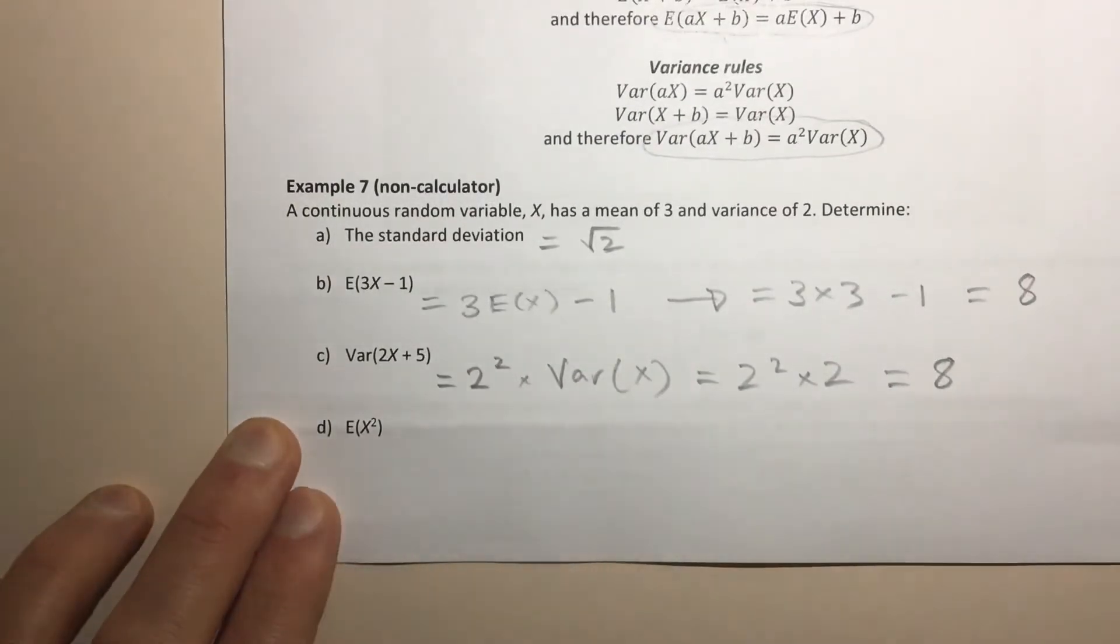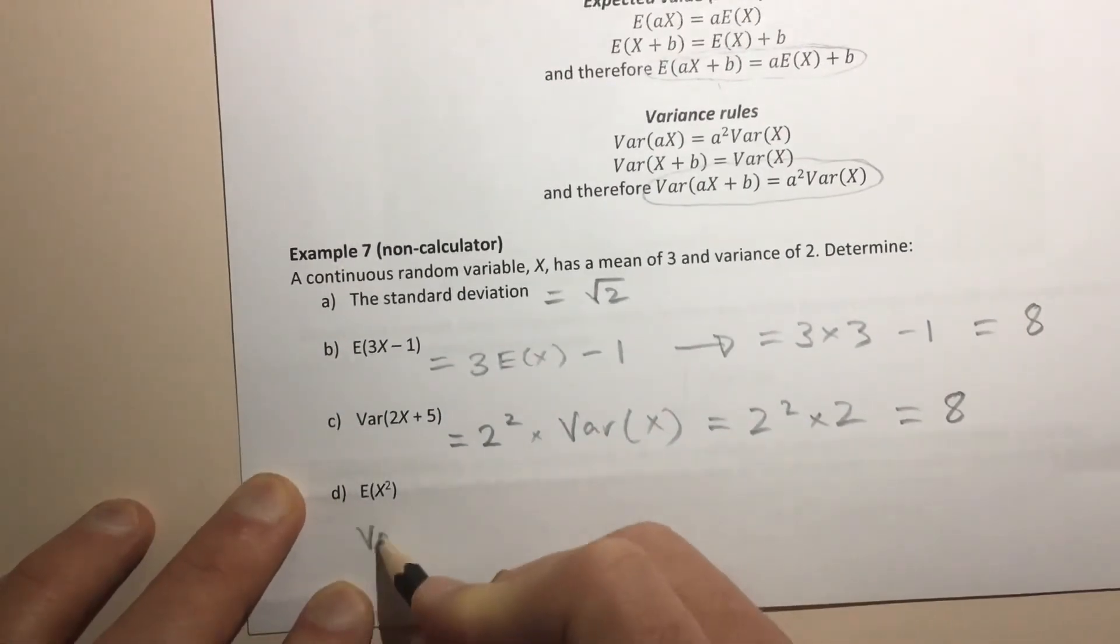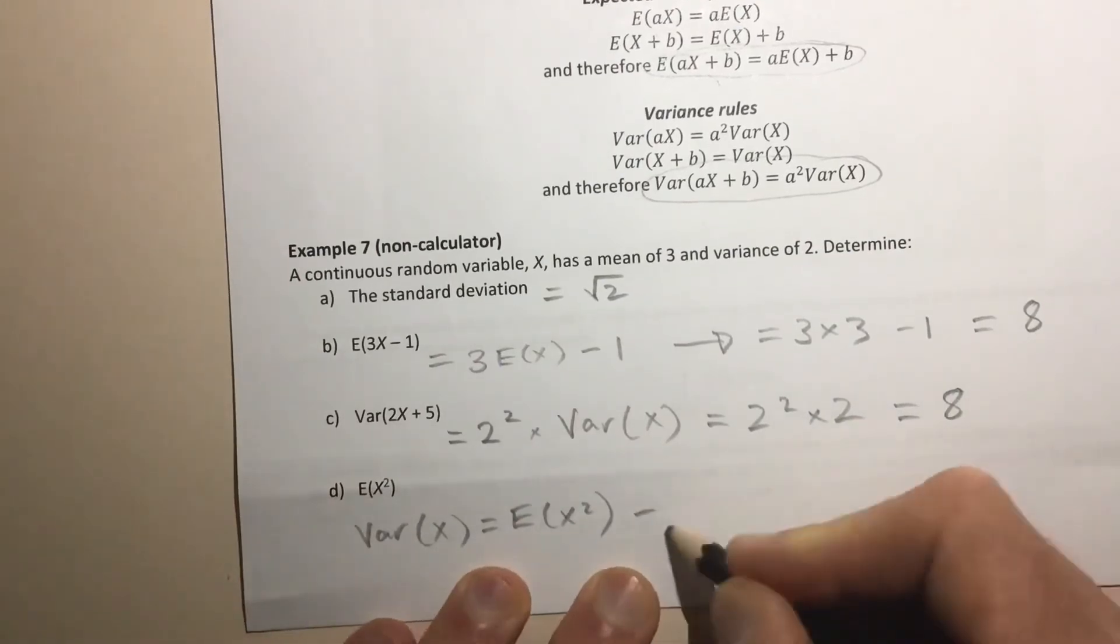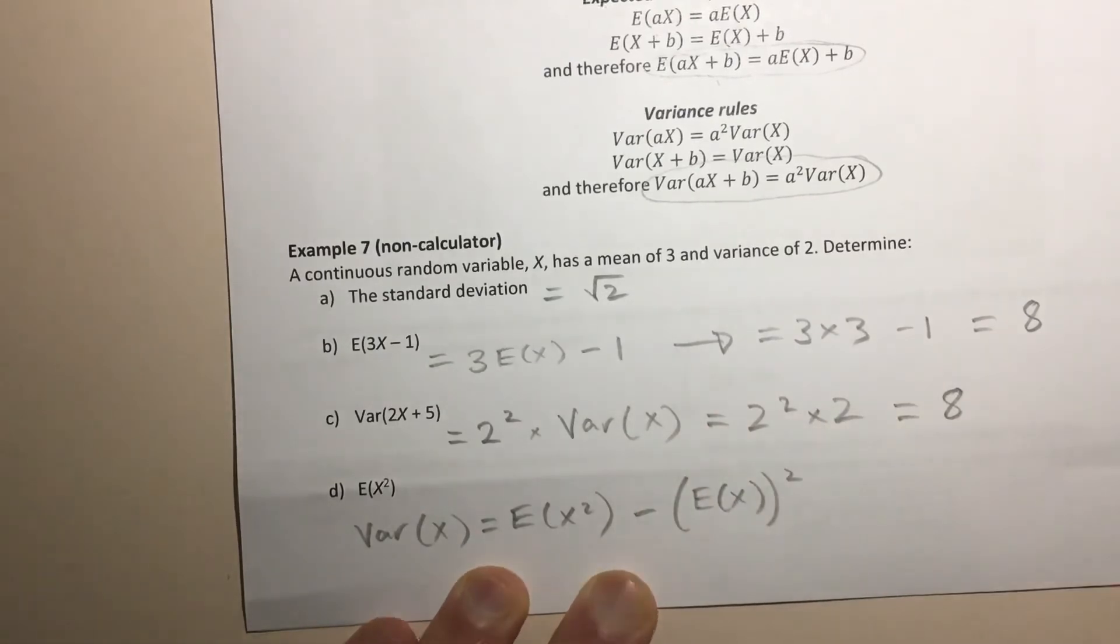This last one's an interesting one. We've got to find the expected value of X². Now remember that the way we think of the variance formula is that Var(X) is equal to the expected value of X² minus the expected value of X, all squared, right?